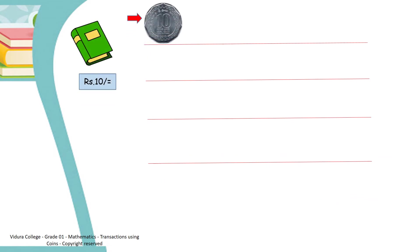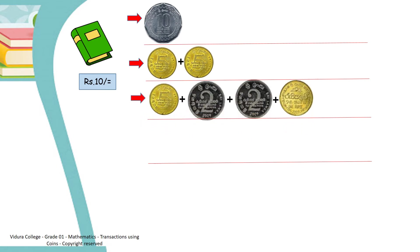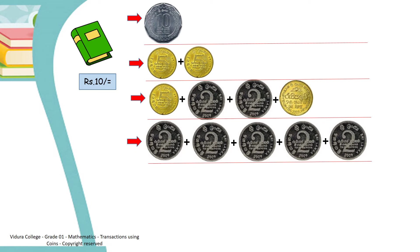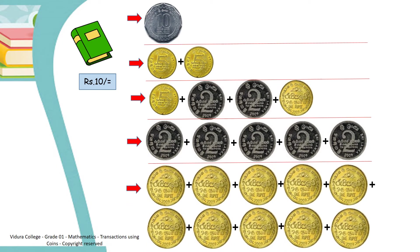To buy a book, he can use a 10 rupees coin, or he can use 2 coins of 5 rupees. Or he can use 1 coin of 5 rupees, 2 coins of 2 rupees, and a 1 rupee coin. Using 5 coins of 2 rupees, he can buy this book. And also, using 10 coins of 1 rupee, he can buy this book.